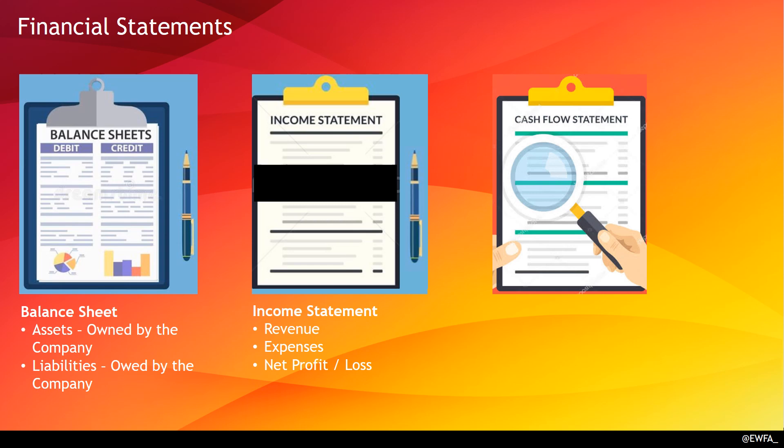The third statement is the cash flow statement. Cash is the lifeblood of business, and this analysis shows how cash has moved for various activities during the year. There are three main parts: cash flow from operations, cash flow from investments, and cash flow from financing activities. Cash flow from operations is the core — that is where the actual money comes from. While the balance sheet is a static snapshot on a given date, the income statement and cash flow statement are running statements covering the entire year.